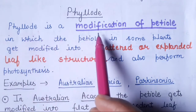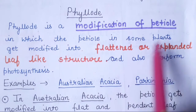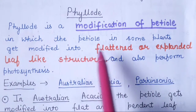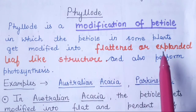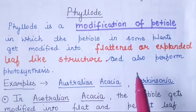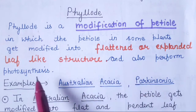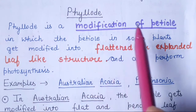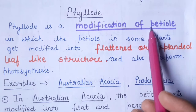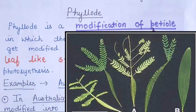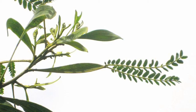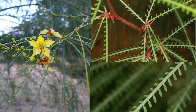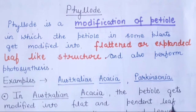Phyllode is basically the modification of petiole, in which the petiole in some plants gets modified into a flattened or expanded leaf-like structure that also performs photosynthesis. So phyllode is simply a modification of petiole in which the petiole gets modified to form a leaf-like structure.